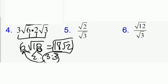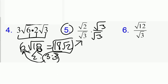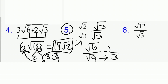Now we need to divide. Starting with number 5, we can't divide root 3 into root 2 — they're both radicals and we never want to leave an irrational in the denominator. So we multiply by root 3 over root 3, giving us square root of 6 over the square root of 9. The square root of 9 becomes just 3, so our final answer is square root of 6 divided by 3.